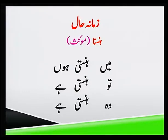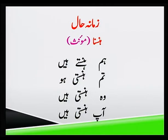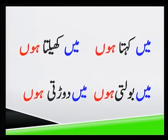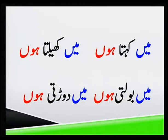مؤنث میں کیسے گردان کریں گے؟ سنیے: میں ہنستی ہوں، تو ہنستی ہے، وہ ہنستی ہے، ہم ہنستے ہیں، تم ہنستی ہو، وہ ہنستی ہے، آپ ہنستی ہیں۔ بچوں یاد رکھیں کہ زمانہ حال میں مذکر اور مؤنث دونوں میں گردان کرتے وقت میں کے ساتھ ہوں کا استعمال کرتے ہیں، جیسے: میں کہتا ہوں، میں کھیلتا ہوں، میں بولتی ہوں، میں دوڑتی ہوں۔